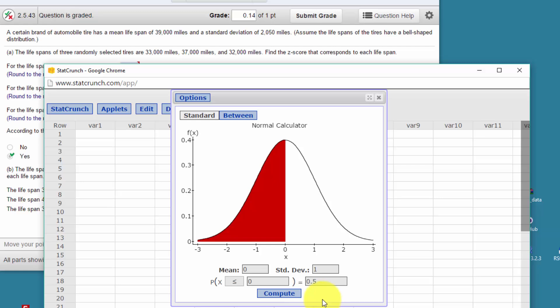You can see that the default for a normal distribution problem is that we have a mean of 0 and a standard deviation of 1. Then we can put in either the probability that we're looking for and get the x value.